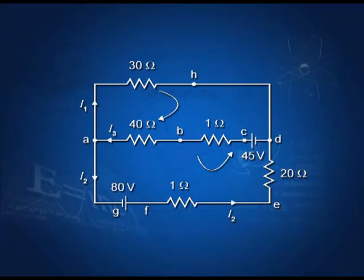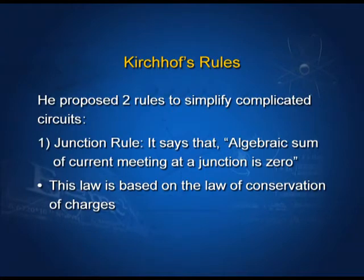Here is a diagram which shows that the current coming towards the junction O is I1 and I2, and the current leaving from the junction is I3. So, I1 plus I2 minus I3 is equal to zero. This law is based on the law of conservation of charges, and mathematically we can say summation of I equals to zero.